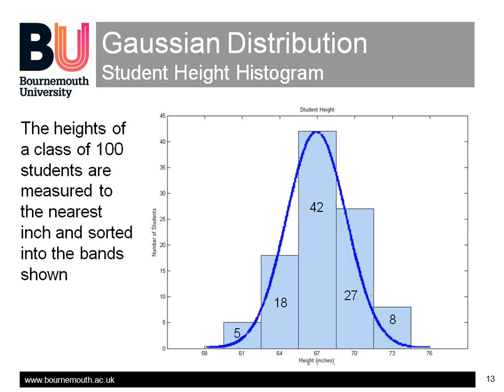Notice, however, that this is the histogram rather than the probability density function at the moment, but if we were to divide by the total of 100 students, the area under the curve becomes unity, and we can then read off the probability of a randomly selected student in the group being in any one height band directly.